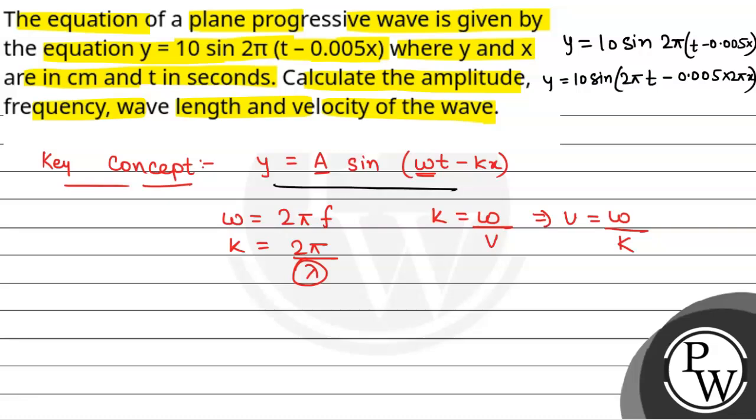So, if we compare this to general equation, we will have amplitude that is equal to 10 cm. And we have the ω that will be 2π.